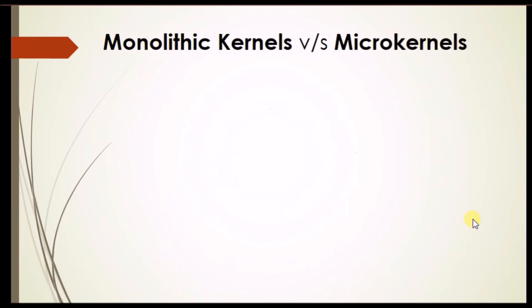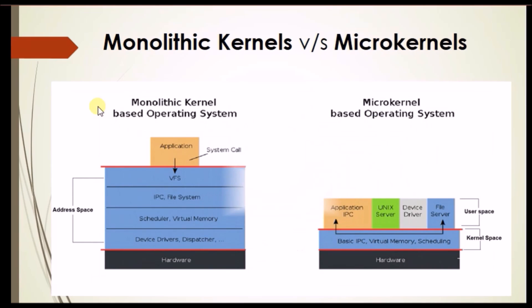So let's see. Hey guys, I'm back. So in this slide, you can see that there is a standard diagram of monolithic kernel and microkernel. In monolithic kernel, there is only one address space. But in microkernel, the address space is divided into two parts. The first one is user space and the second one is kernel space.